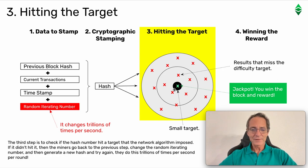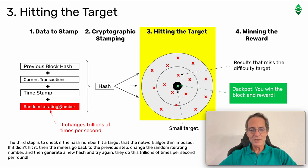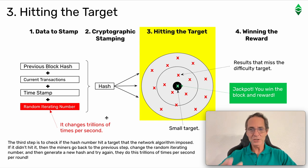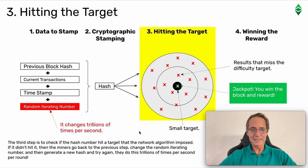The iterating number — the random number — when you have these four pieces of data and you hash it once with an algorithm, it generates a certain number. If you change this number, then when you hash it you generate a different number, and then a different number, and then a different number. So this repetition is the idea of this constant repetition of the hashing of the data.